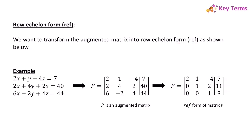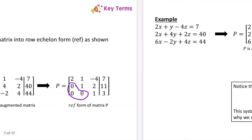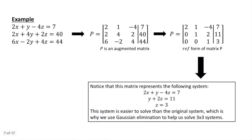So what is row echelon form? It's this form where you can see we have a triangle of zeros in the left corner. The first element of row 2 and the first two elements of row 3 are going to be zero in row echelon form. You may be wondering why we care about getting this into row echelon form.